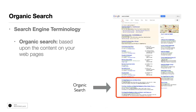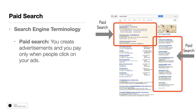Organic search is based on the content that you have on your web pages. For example, 'New York used car dealer' search results are based on what's on these people's websites. Paid search — the ads are triggered by what my search keywords are.